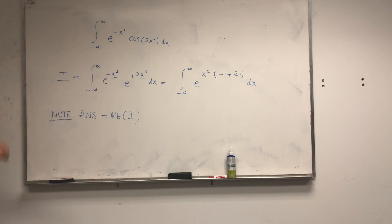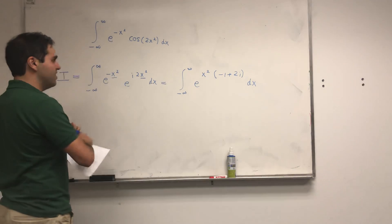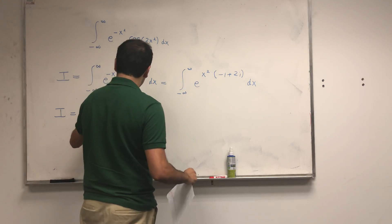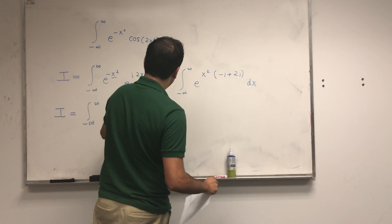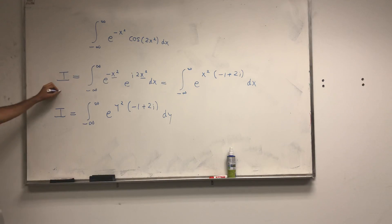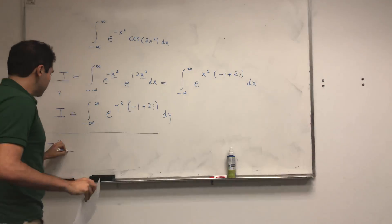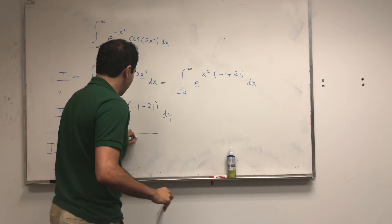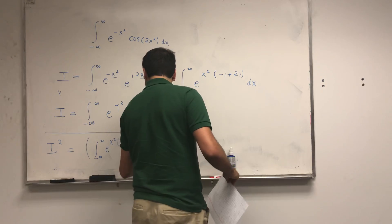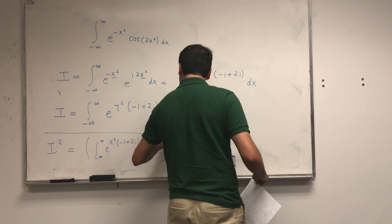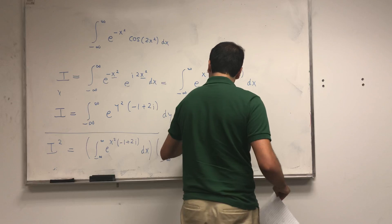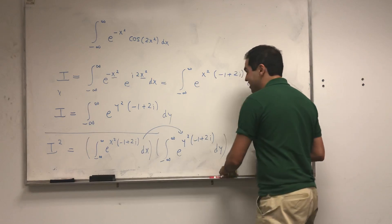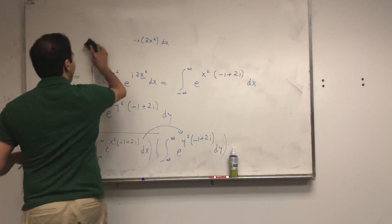And how do you deal with this? Just like usual — we can write the same integral with y. So I is also the integral from minus infinity to infinity of e to the y squared times minus 1 plus 2i dy. Then all you want to do is multiply those two things, so I squared is the product of both integrals — one in x and one in y.